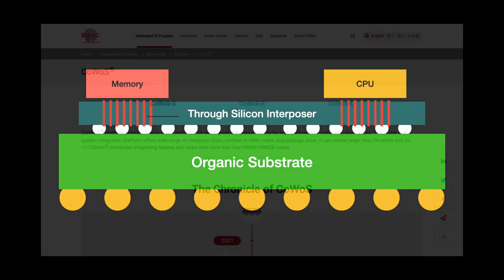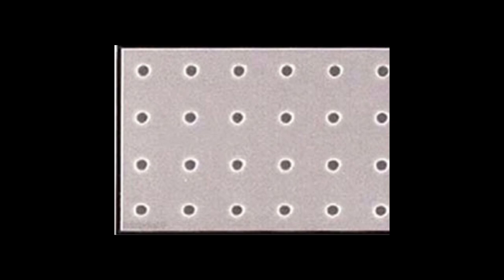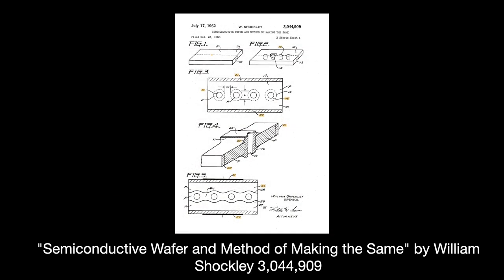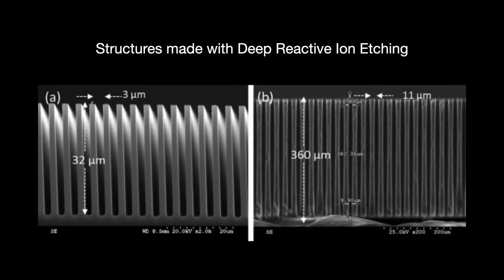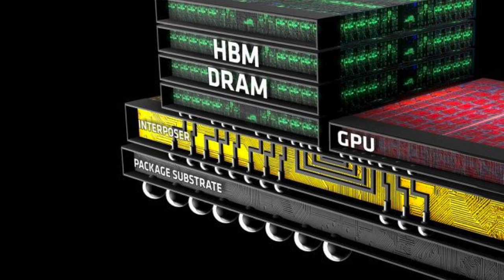2.5D's key technology lies within the interconnect. 2.5D uses what is called a through-silicon interposer, which sits on top of the substrate. These interposers are labeled through-silicon because they feature through-silicon vias, or TSVs — vertical interconnects, basically a wrapped conductor passing through a die's silicon substrate. The concept is not new; it was invented by semiconductor pioneer William Shockley all the way back in 1958. TSVs are most commonly made using deep reactive ion etching, a method of using corrosive gases to rapidly etch silicon originally developed for the MEMS industry. The first 2.5D package solutions emerged in the 2010s and include AMD's Radeon Fury GPUs and Xilinx's Virtex FPGAs.